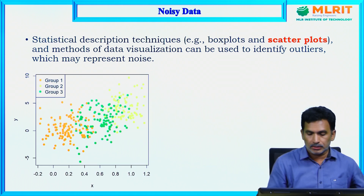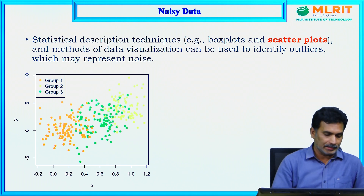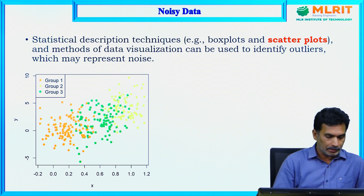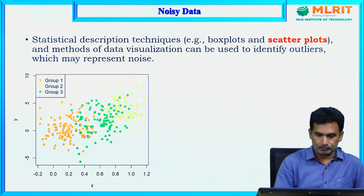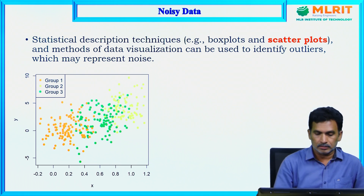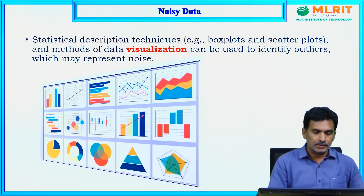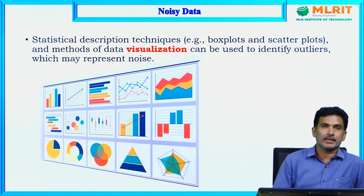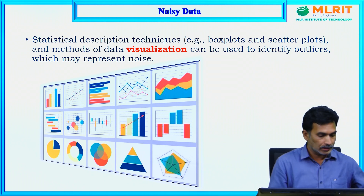Similarly, we can use scatter plots to identify noise in the data. From this plot you can see there are three groups, but there are some data points where overlap occurs. This is also a useful statistical description technique to identify noise in the data. Many other visualization techniques can also be used to identify outliers representing noise.